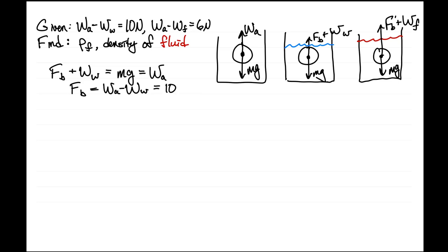In the other case, we have the different buoyancy force plus the weight in that fluid equals mg, which equals the weight in air. So the second buoyancy force equals the weight in air minus the weight in that fluid, which is 6 newtons.